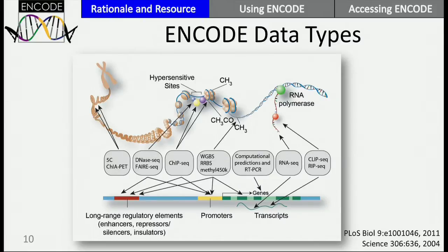ENCODE is built on decades of research on gene regulation — a very strong foundation. For years, people studying gene regulation have looked at DNA-DNA interactions, changes in chromatin structure, and binding of proteins to DNA. ENCODE is using high-throughput genome-wide versions of these assays to reverse engineer the genome, using these hallmarks of gene regulation to identify where genes are, the transcripts that come from the genes, and regulatory regions like promoters, enhancers, and splicing sites.